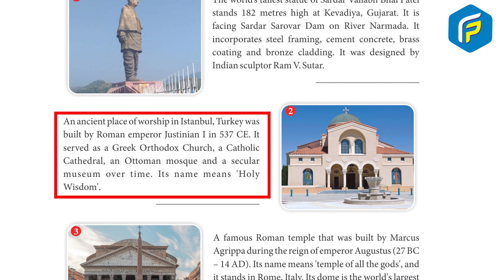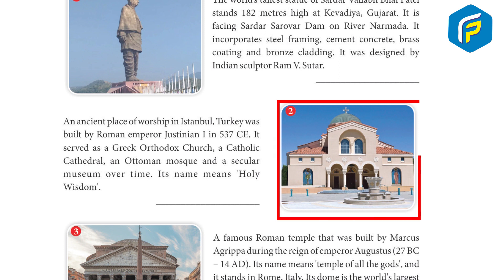Number two: an ancient place of worship in Istanbul, Turkey, built by Roman Emperor Justinian I in 537 AD. It served as a Greek Orthodox church, a Catholic cathedral, an Ottoman mosque, and a secular museum over time. Its name means 'Holy Wisdom.'